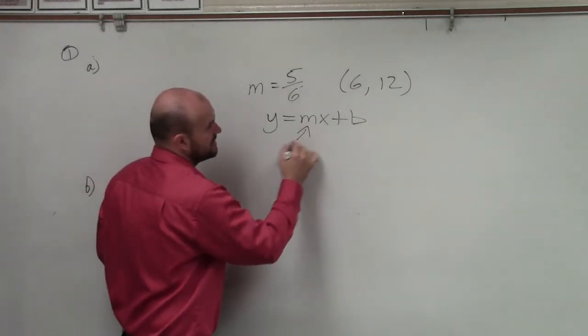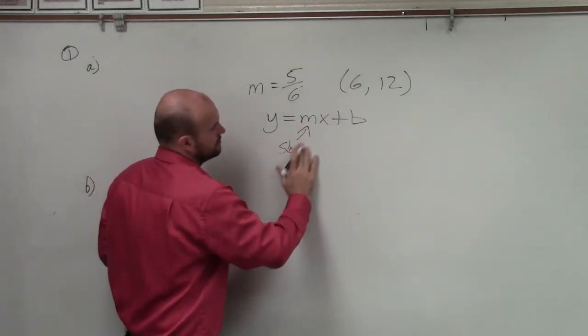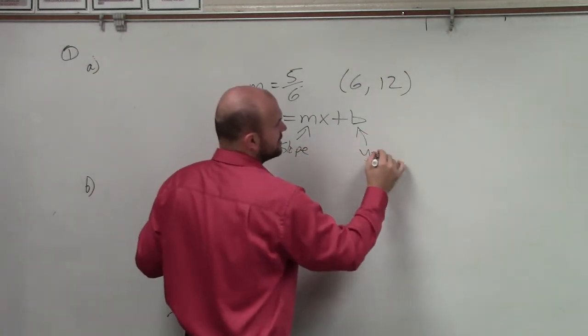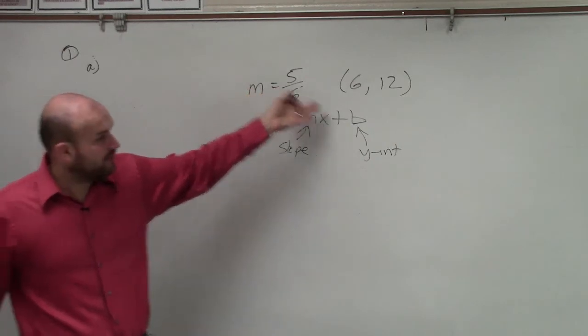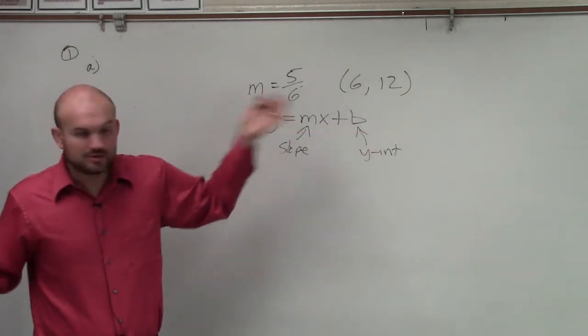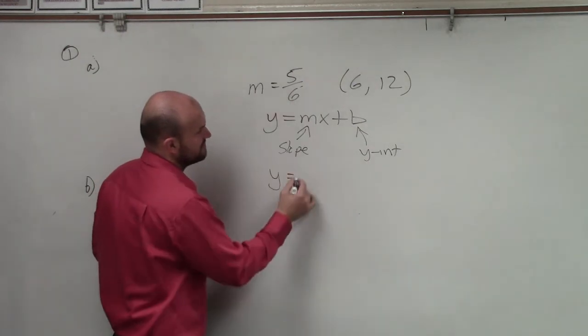Now remember, m represents your slope and b represents your y-intercept. Well, they give us our slope, but we don't have the y-intercept, right? So the first thing we're going to do is plug in the value for slope, which is 5/6.